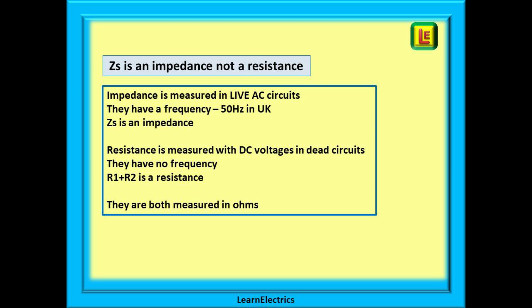First let's clear up a little thing. ZS is an impedance because it is measured on a live circuit alternating current. It has frequency. But resistance in our trade is measured on dead circuits or DC circuits with no frequency. R1 plus R2, for example, is a resistance, a DC measurement on a dead circuit. But they are both measured in ohms and at 50 cycles per second or 50 hertz the difference between impedance and resistance is so small that it is not worth worrying about. So, for me, if you call ZS a resistance or an impedance I would still know what you were talking about.